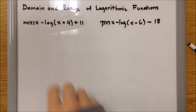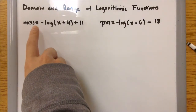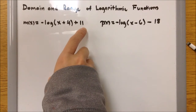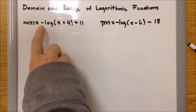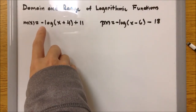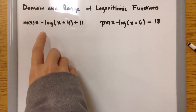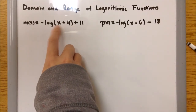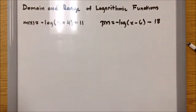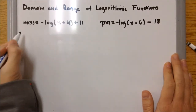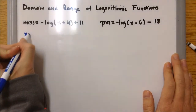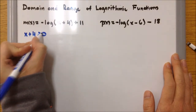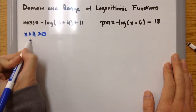Example 3: we have M of x equals negative log of x plus 4, then plus 11. What's different is we have a negative in front of log, which simply means the graph is reflected over the x-axis. But we still have to pay close attention to what's inside — x plus 4 — which still has to be greater than 0 when it comes to domain.